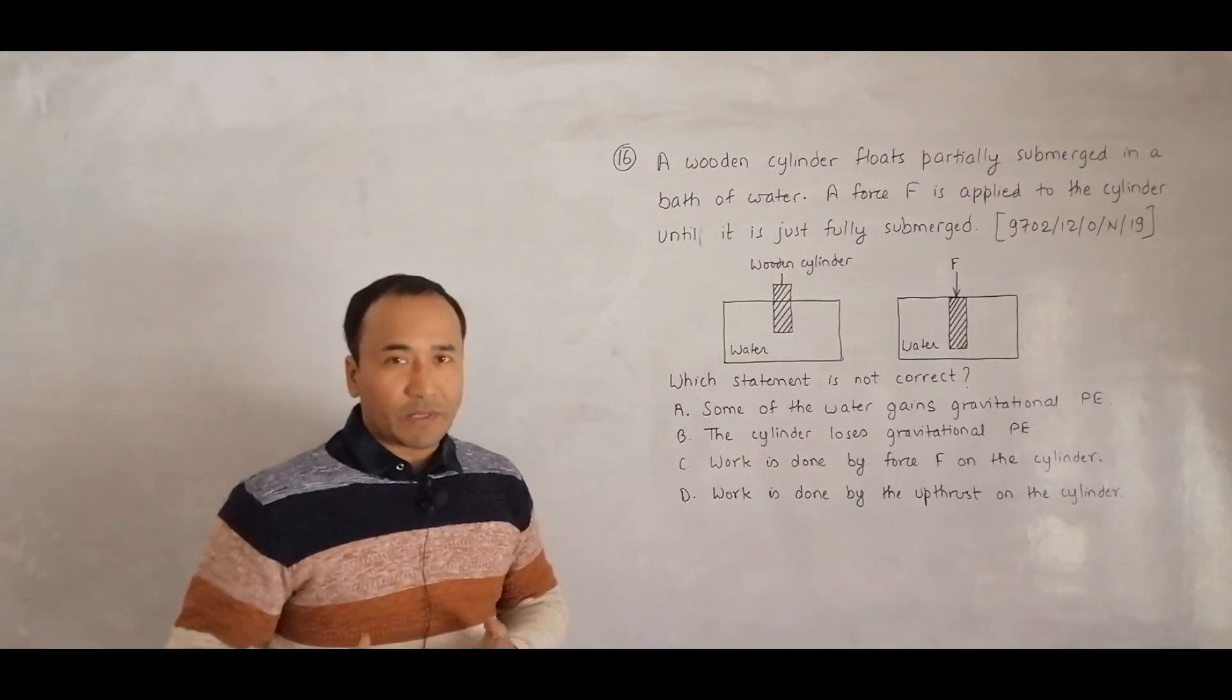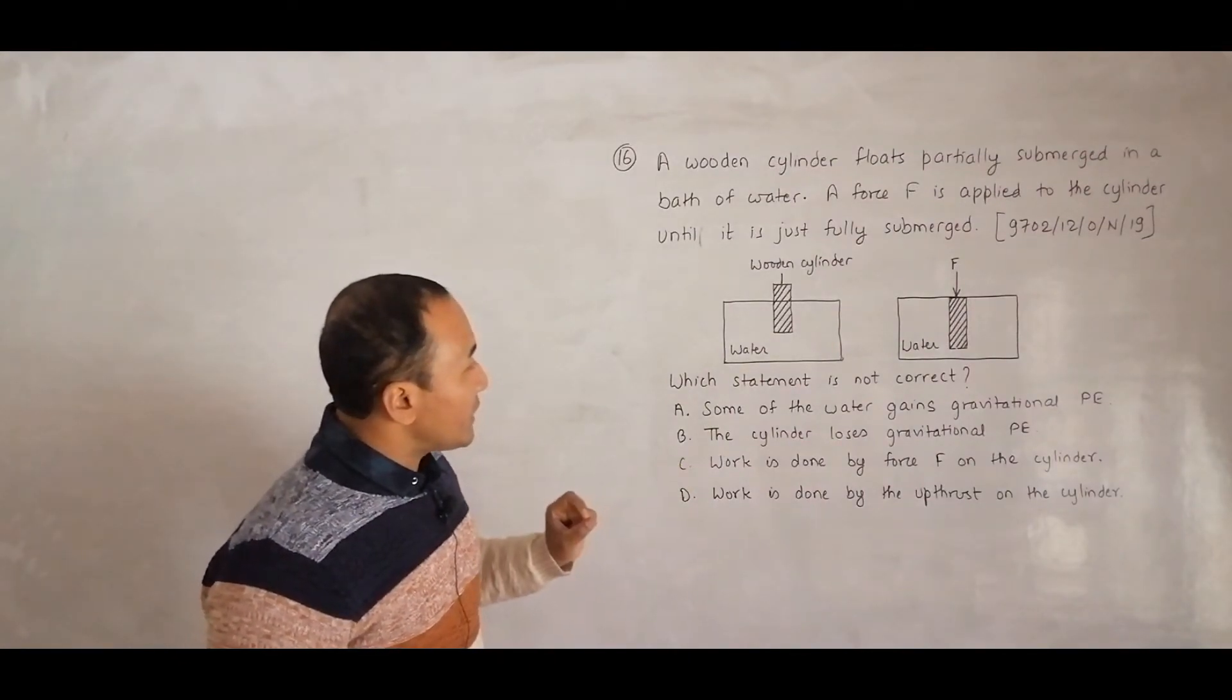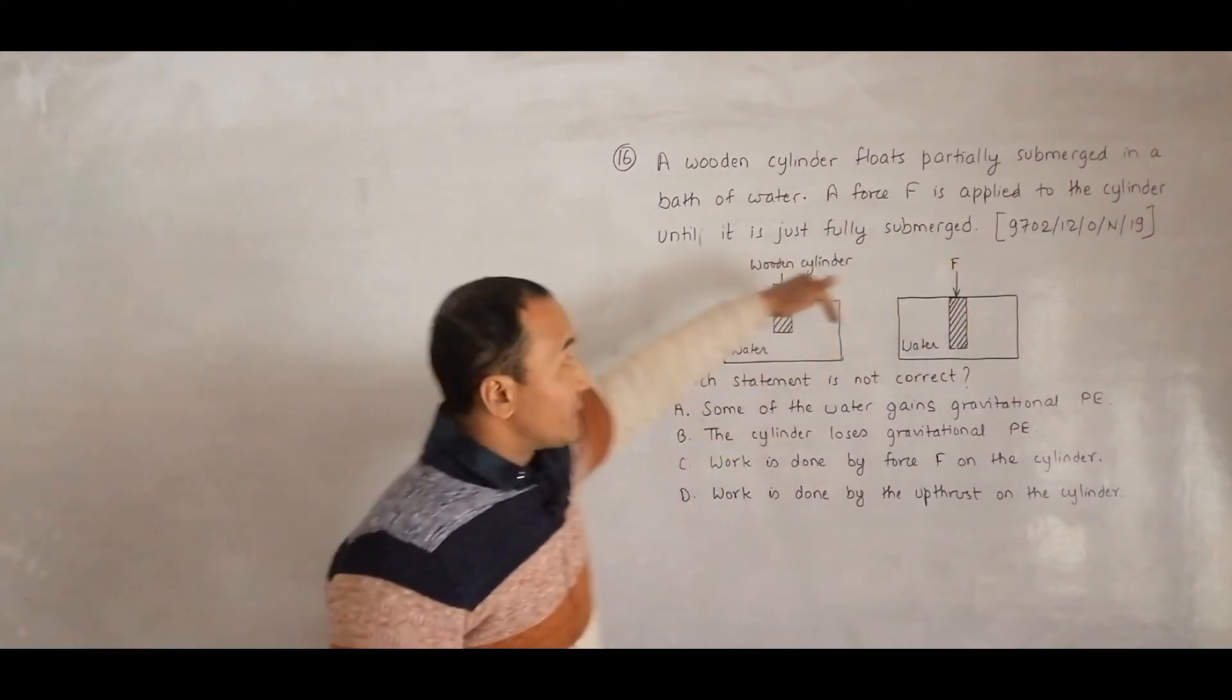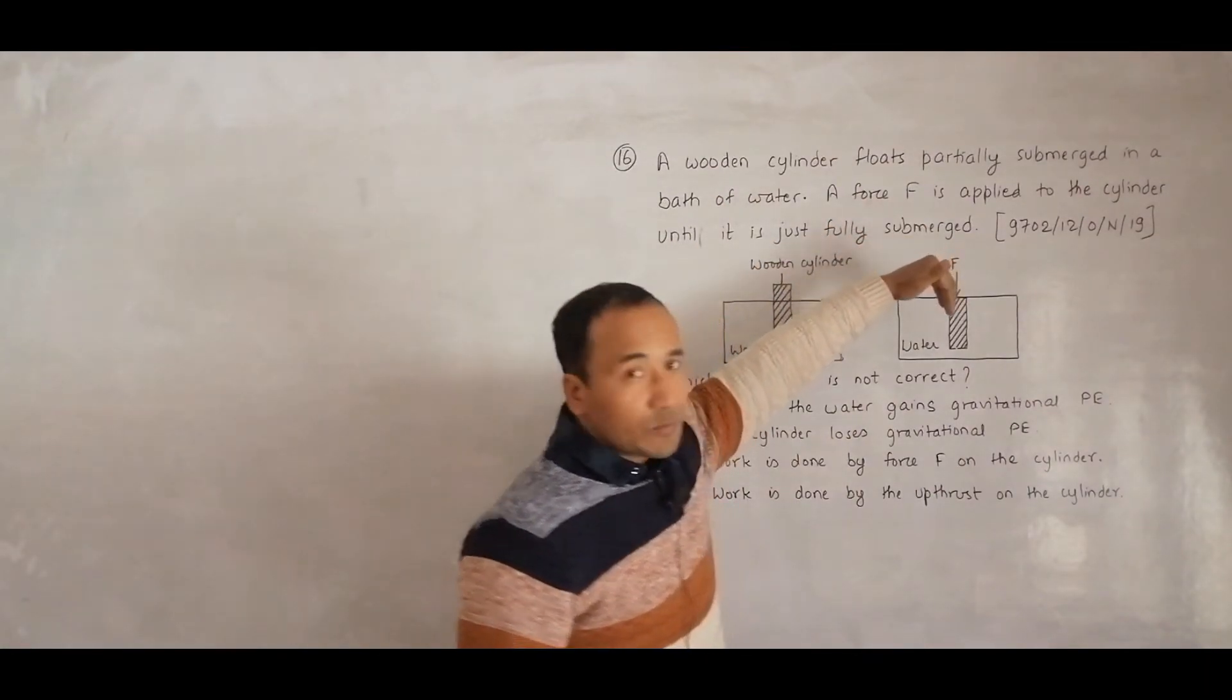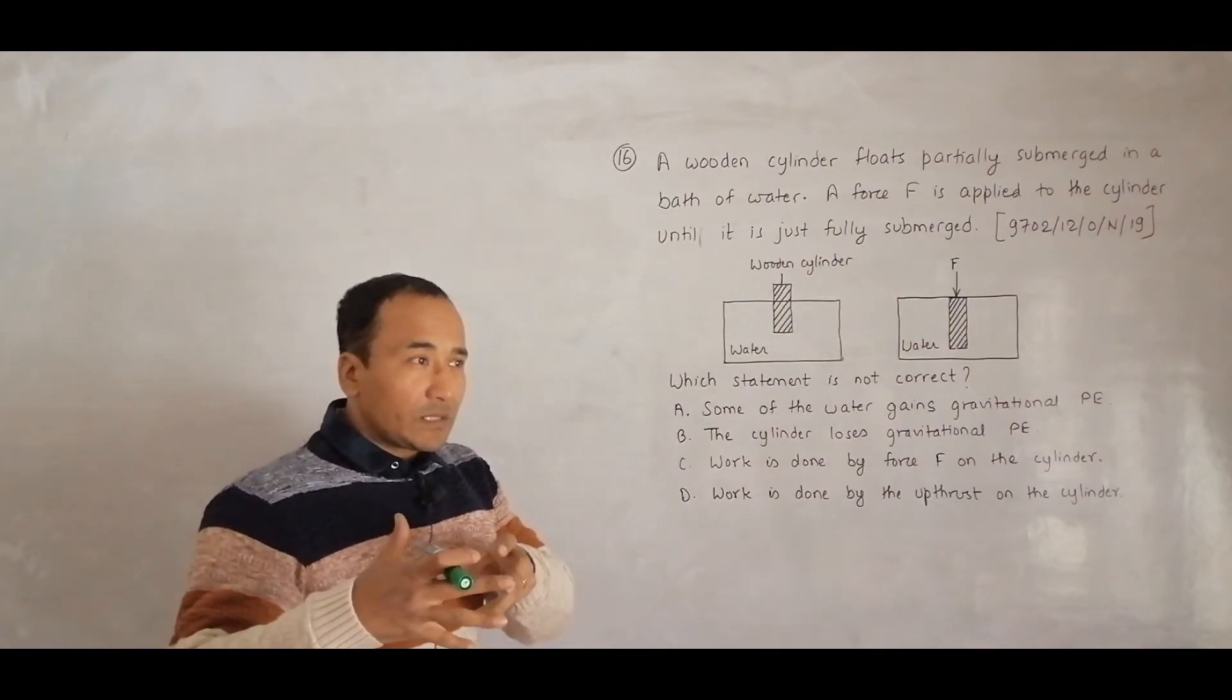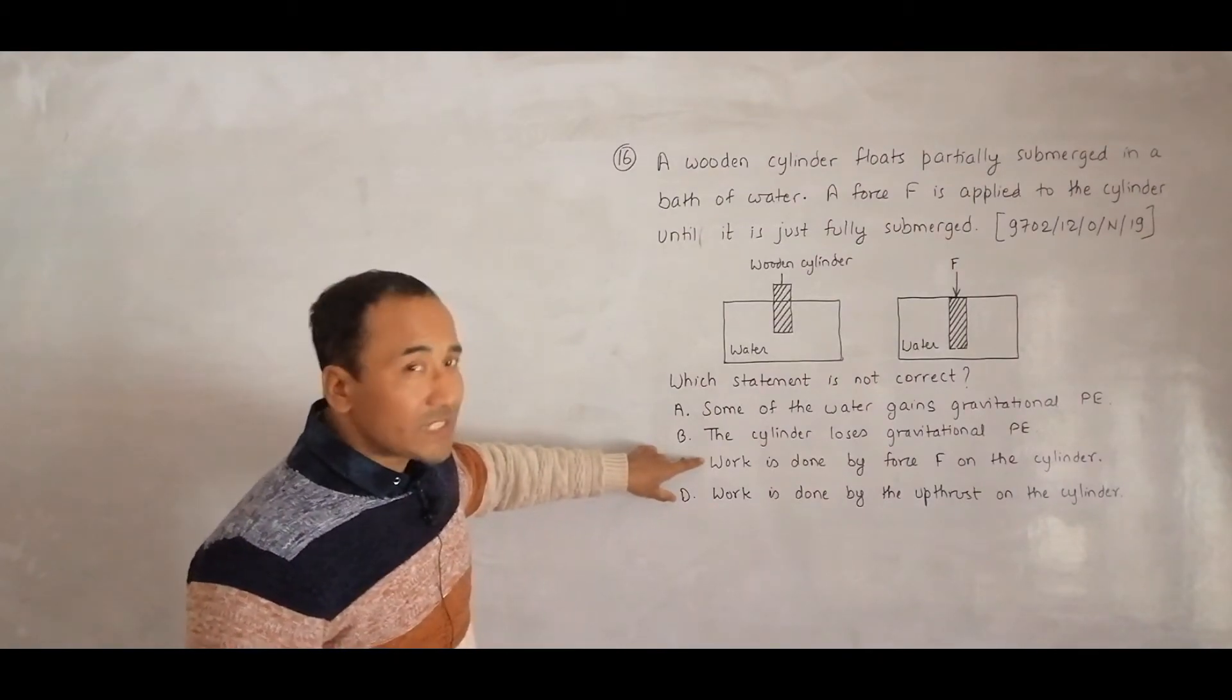Option C: Work is done by force F on the cylinder. This is true because it's already in equilibrium, so we're disturbing the equilibrium. This force has to do some work, it has to exert effort to move it away from equilibrium. So this is also a true statement.